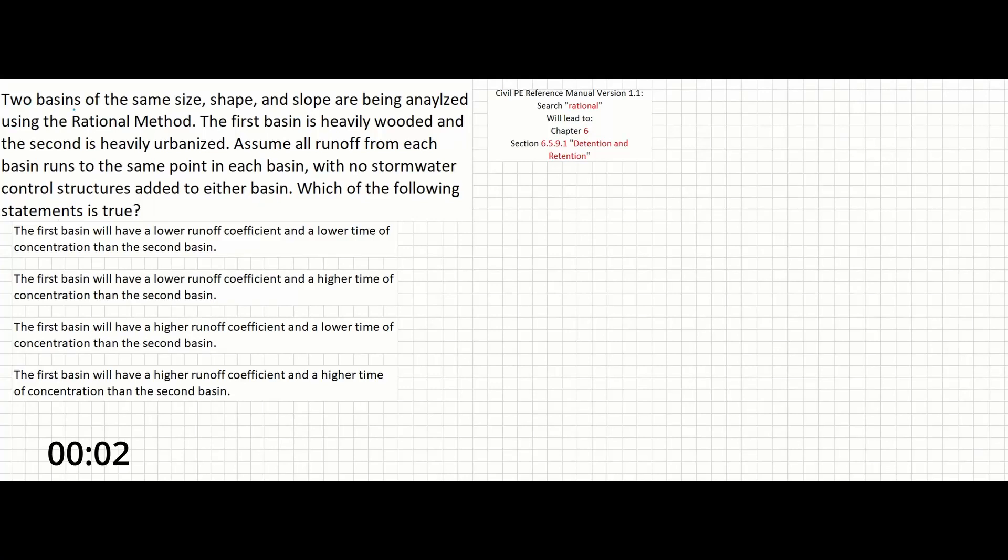In this problem, two basins of the same size, shape, and slope are being analyzed using the rational method. The first basin is heavily wooded and the second is heavily urbanized. Assume all runoff from each basin runs to the same point in each basin, with no stormwater control structures added to either basin. Which of the following statements is true?